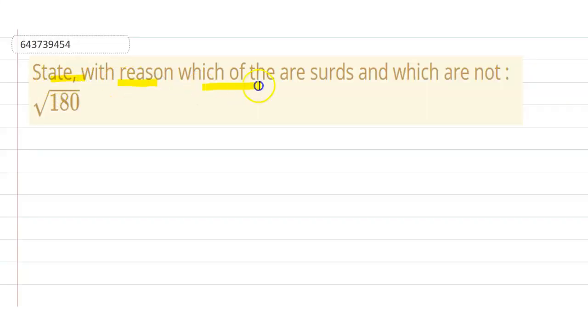have to tell with reason which of the following are surds and which are not. The given number is square root 180.